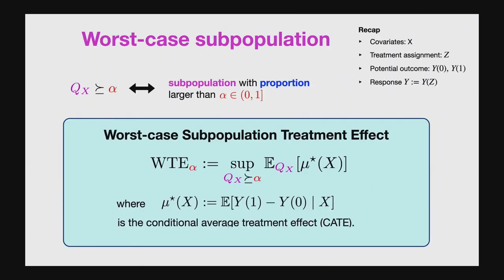I'm going to consider all different subpopulations, but because I can't look at arbitrary subpopulations, I'll look at a user-specified number alpha — akin to the robustness radius — and consider all subpopulations that comprise at least alpha fraction of my study population. If alpha is 20%, the subpopulation comprises at least 20% of my study. With this, I can define the worst-case treatment effect over these subpopulations, which is simply the supremum of the CATE function mu(X) across subpopulations comprising an alpha fraction. This worst-case notion is agnostic to demographic groupings and automatically accounts for intersectionality in heterogeneous treatment effects.